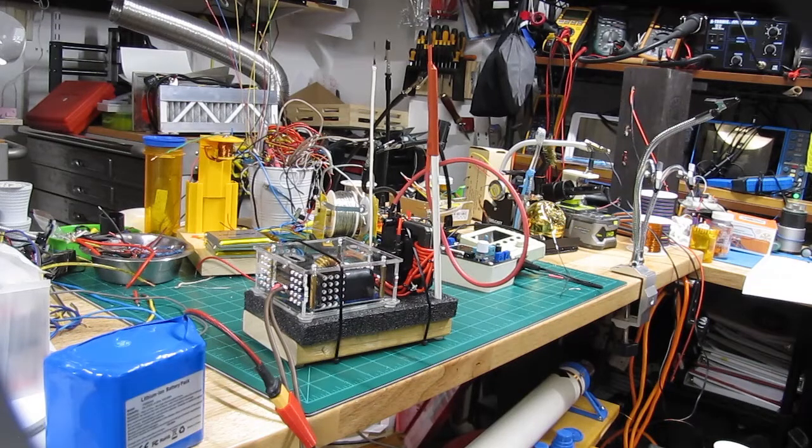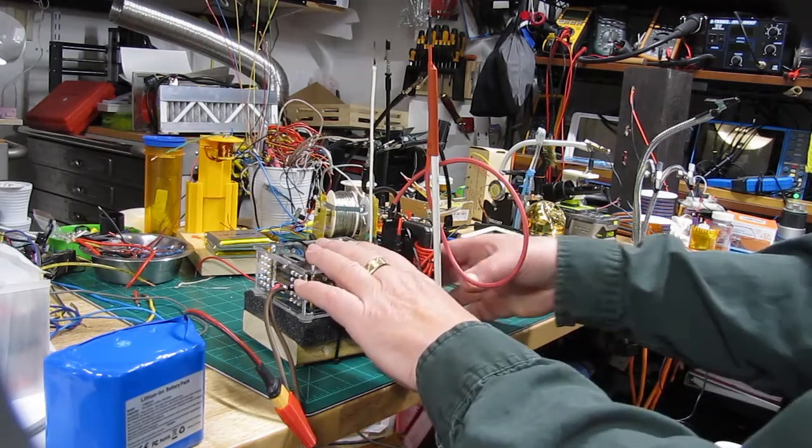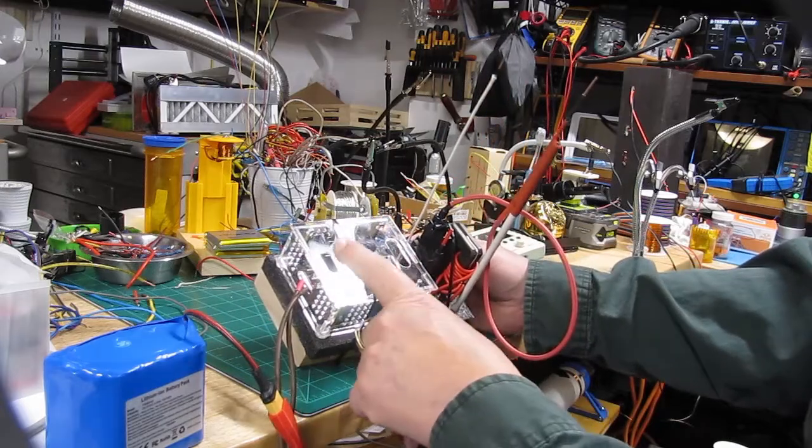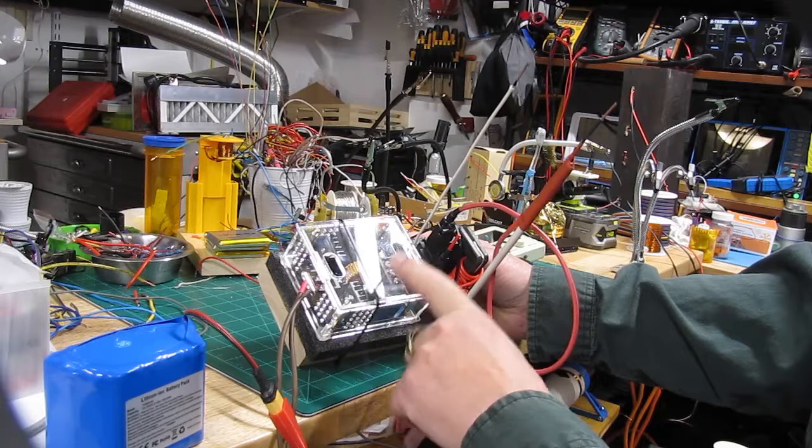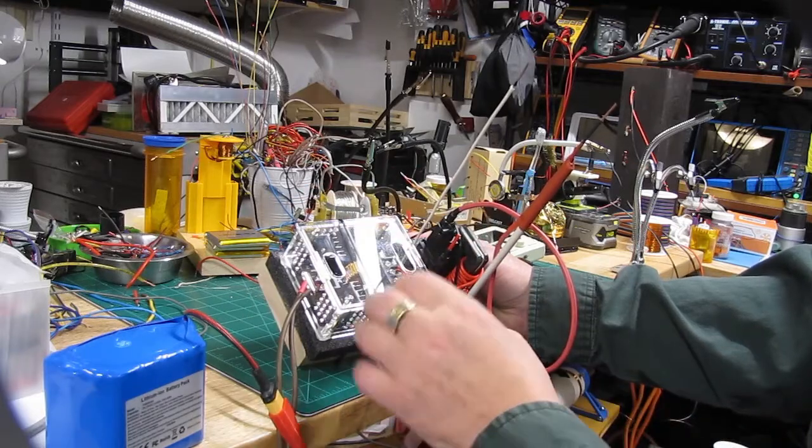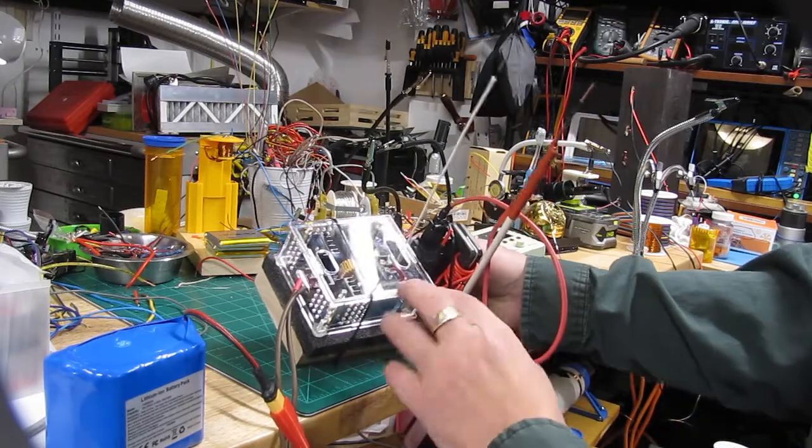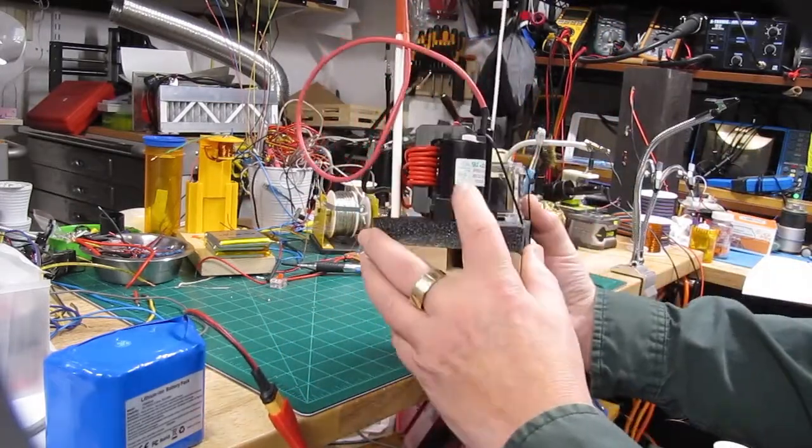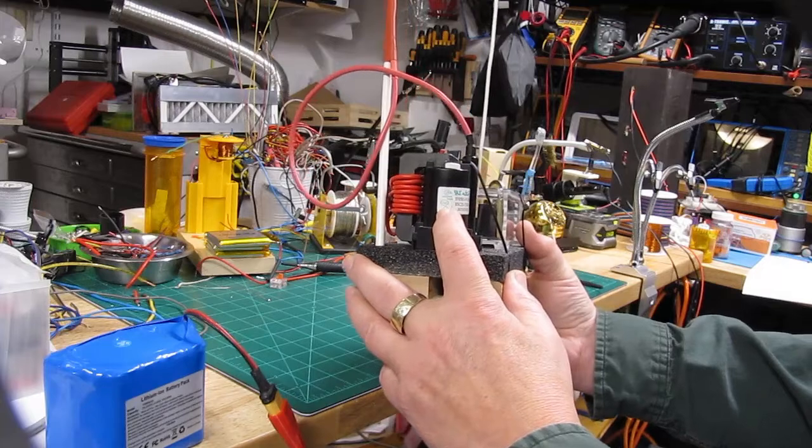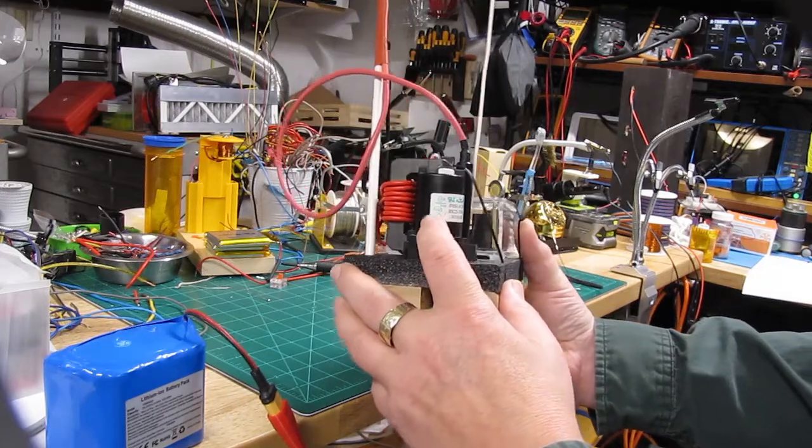Okay, now what it's made out of is, I mentioned it has one of these ZVS zero volt switching units. I bought this one with a plastic container so people don't put their hands in there. Then this part here is a transformer, a high voltage transformer taken out of a television set that I took apart.